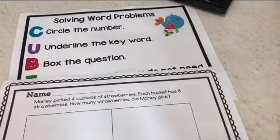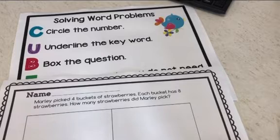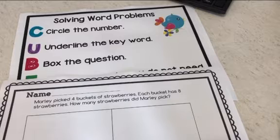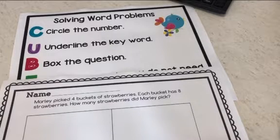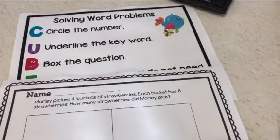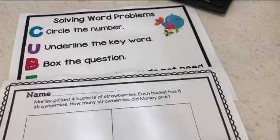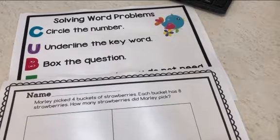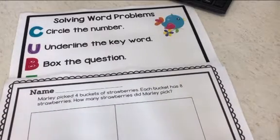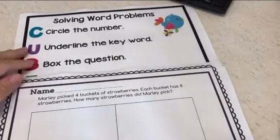When I teach math word problems, I teach my students the CUBES method. The very first thing we do is read the story together and discuss what's happening in the story. Is there a character? What's happening to the character? I use a lot of hand movements for deciding whether we're going to put things together or are we taking things apart. First we try to understand what is happening in the story, and then we start using the CUBES method.